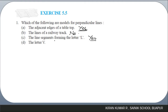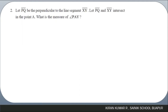The letter V is not a model for perpendicular lines because the angle formed between those two line segments is less than 90 degrees.